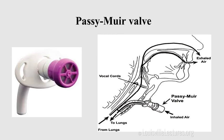Another thing we see is the speaking valve. You have to be familiar with its mechanism. The valve goes over the tracheostomy — it's a one-way valve. You inhale air through it, and when you exhale, the air passes through the vocal cords so the patient can vocalize and talk.